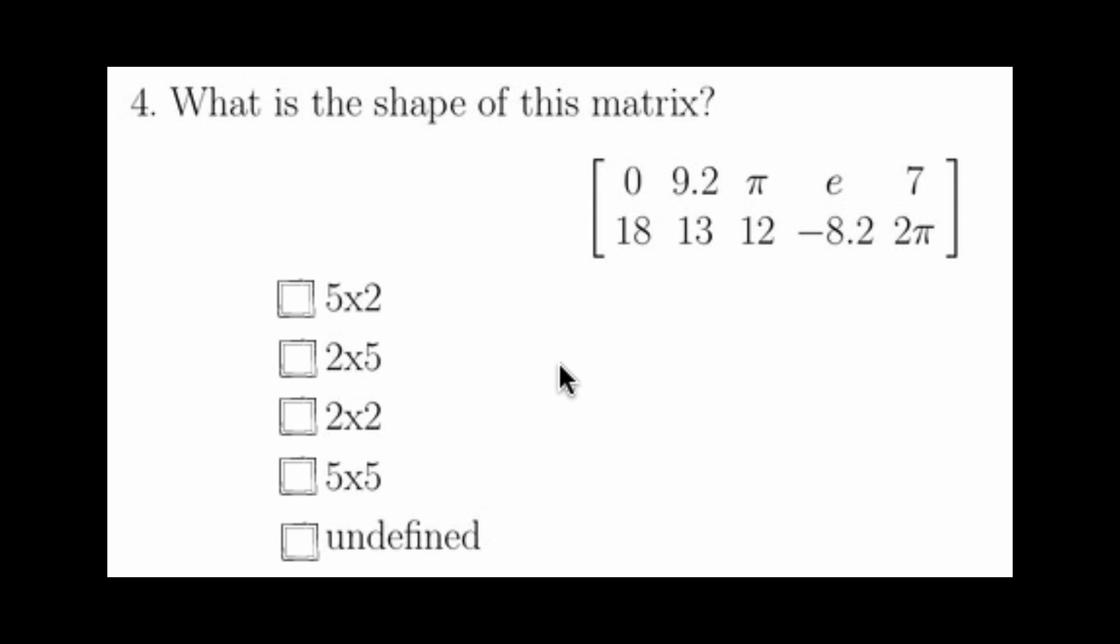For problem 4, all you need to know is that the shape of a matrix is defined as the row times the column. Since there's 2 rows, and 1, 2, 3, 4, 5 columns, this is a 2 by 5 matrix.